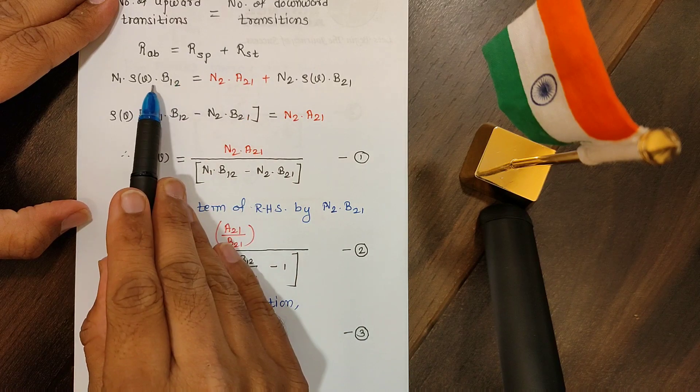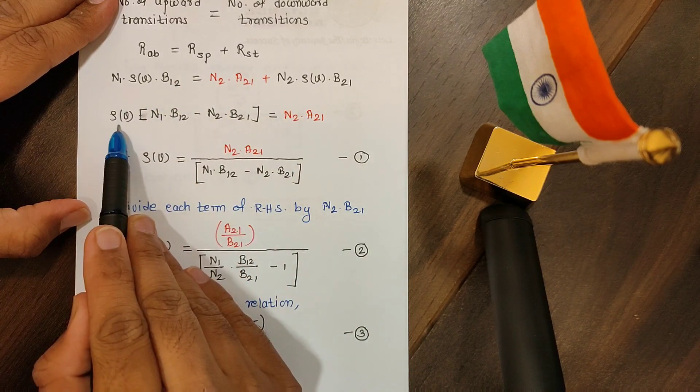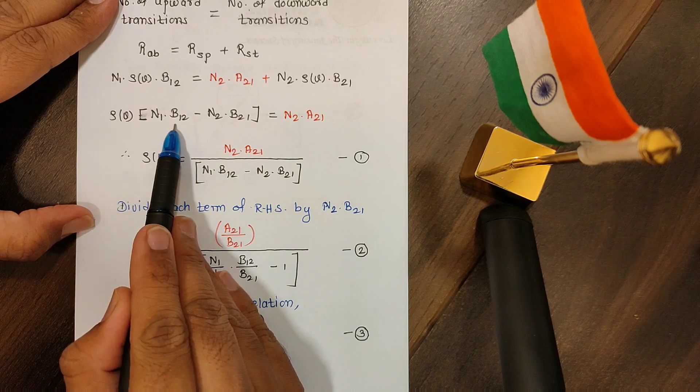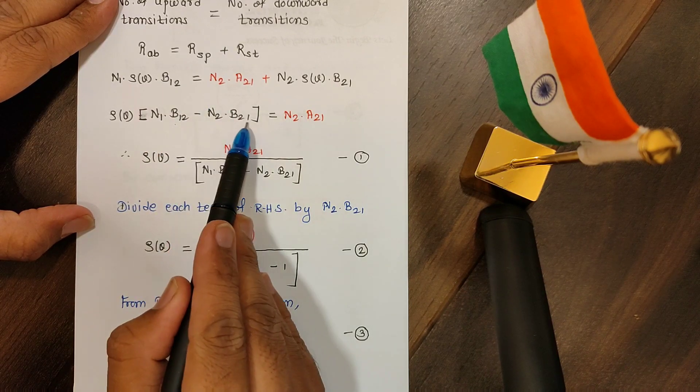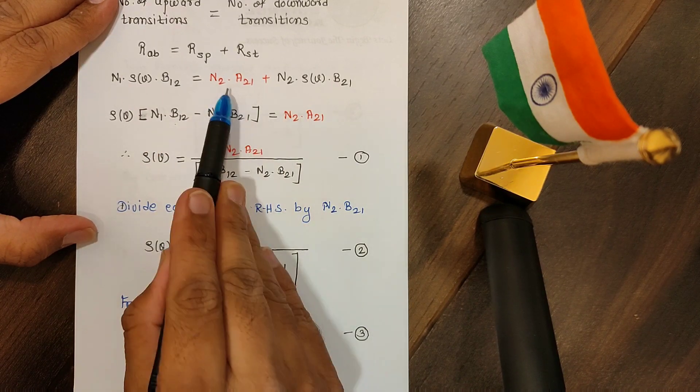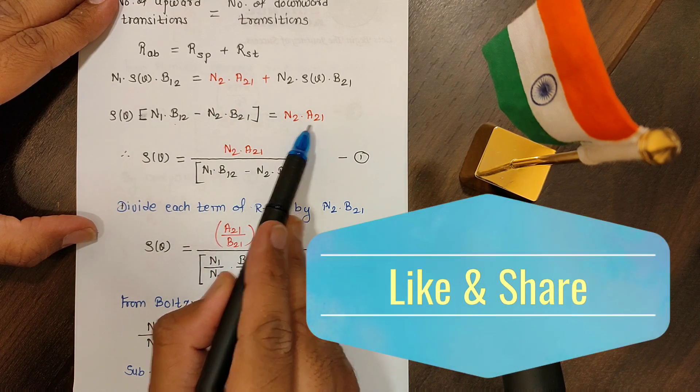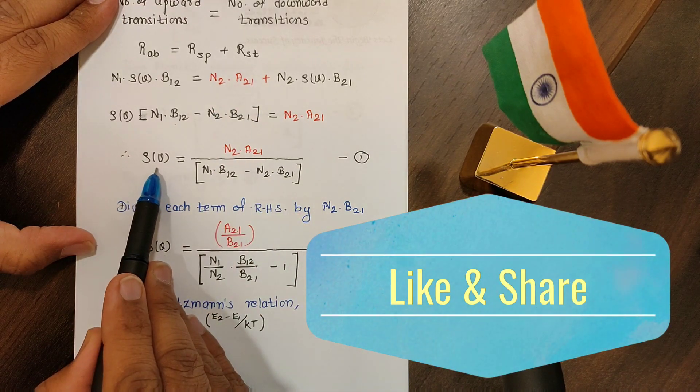So RAB is given by n1 rho into b12. RSP is given by n2 into a21 plus RST is given by n2 into rho into b21. Now we will bring the terms containing rho on one side, so we can pull rho common from here.